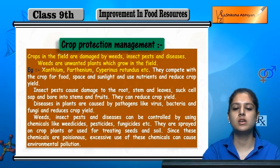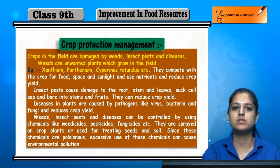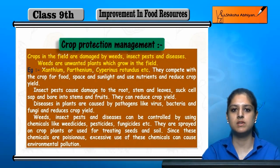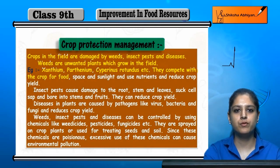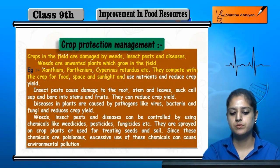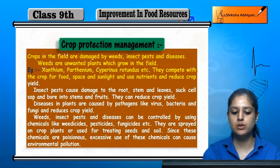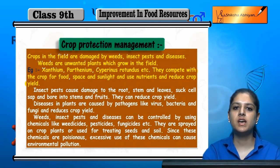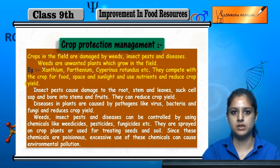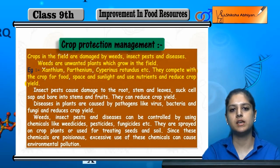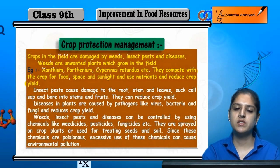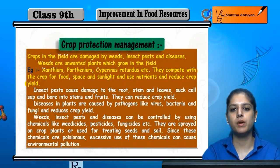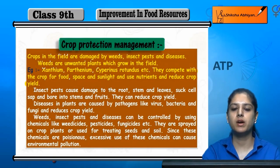There are some weeds that grow in the field and the crop is poor because they compete with the crop for food, space, and sunlight. They use nutrients and reduce crop yield. These weeds are also plants, so they compete with the main crop, causing the main crop to be poor.